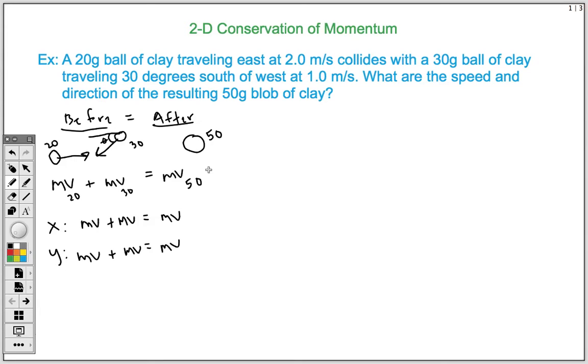Our next step is to start plugging in the values for solving for these two equations. Before we do that, though, we need to actually know what is the momentum of these two objects. At this point, our ball that's traveling east is going to have a momentum of, and I'm going to convert to kilograms here, 0.02 times 2 meters per second. So we have a momentum of 0.04 newton seconds.